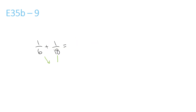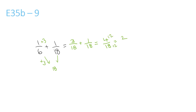6 and 18, that's the number they both go into. 6 times 3 is 18, so we times the top number by 3. 1 times 3 is 3 over 18. Plus 1 over 18, which stays the same. 3 plus 1 is 4 over 18. Now the top and bottom can both be divided by 2 to give us 4 divided by 2, which is 2, over 18 divided by 2, which is 9.